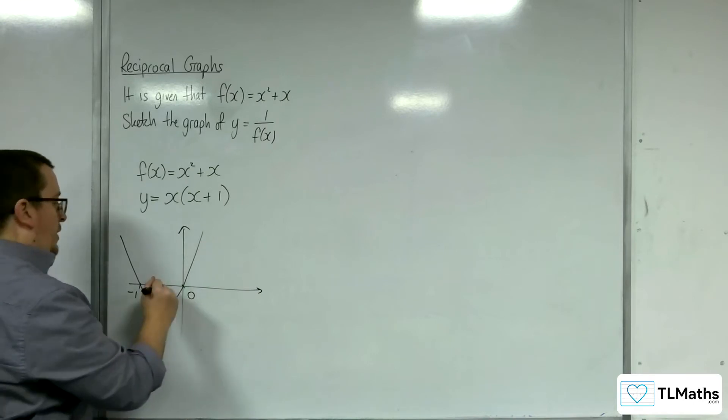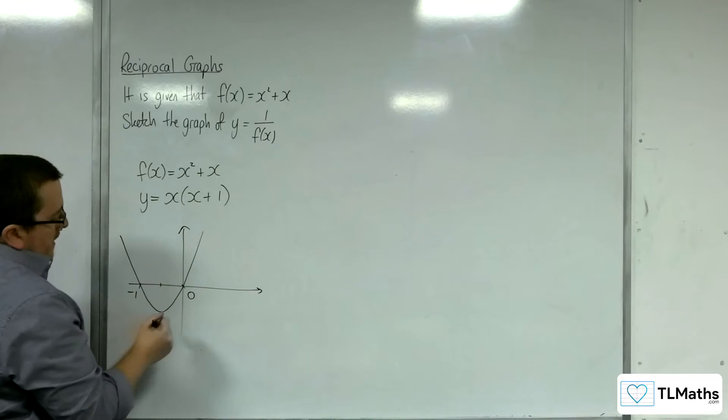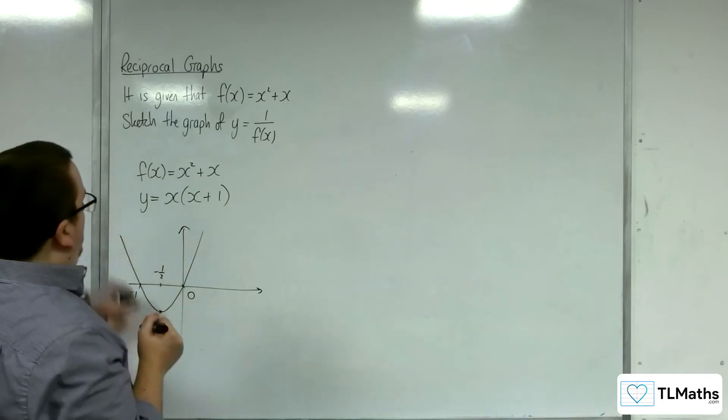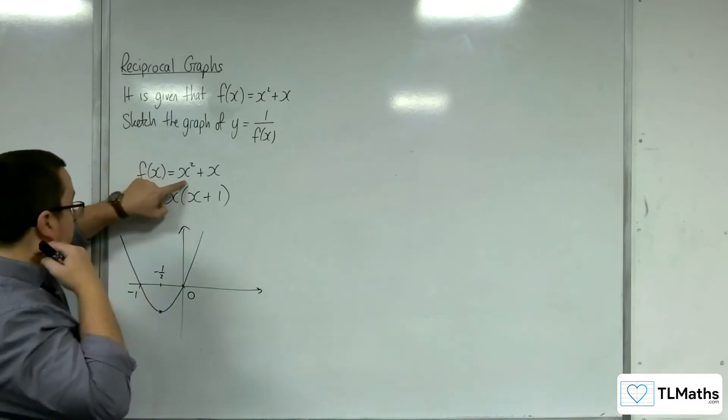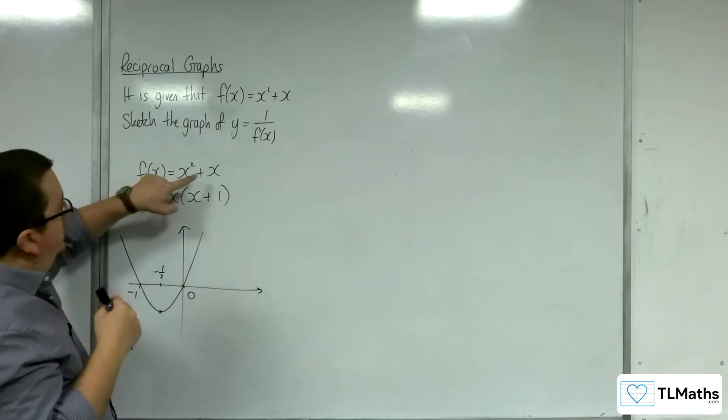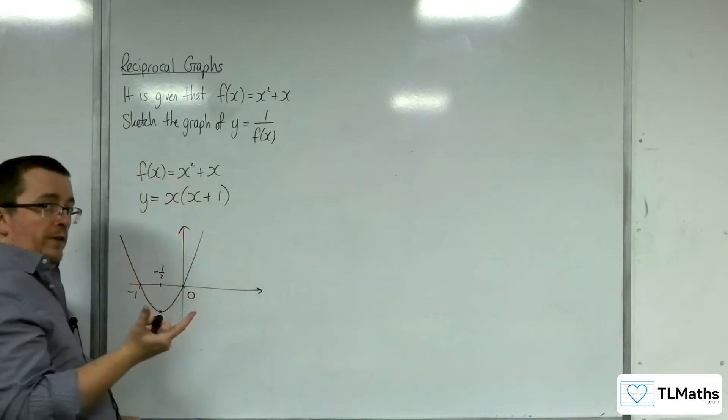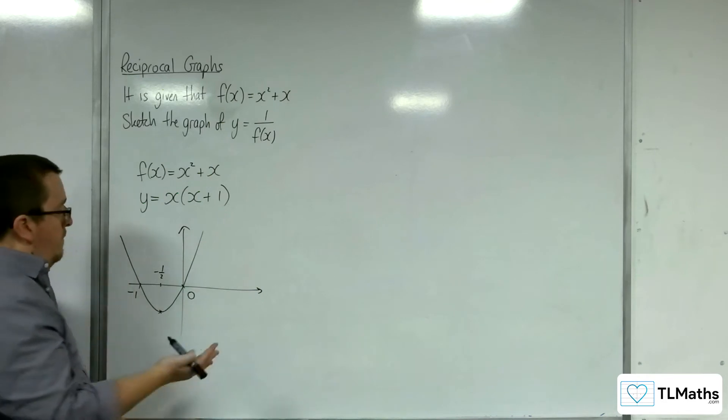It will have a minimum point when x is -1/2. So that would be (-1/2)² = 1/4, then take away 1/2. So 1/4 - 1/2 = -1/4.